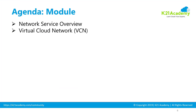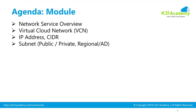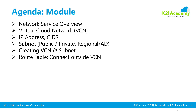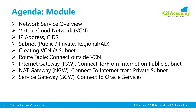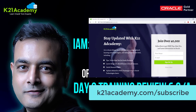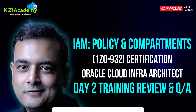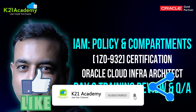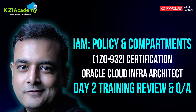Next week I'm going to talk about networking — things like virtual cloud network, CIDR, subnet, routing tables, and different types of gateways you should know, such as internet gateway, NAT gateway, service gateway, and dynamic routing gateway. Don't forget to subscribe at k2nacademy.com/subscribe or on our YouTube channel so you don't miss any new content related to Oracle Cloud. That's it for today from Atul Kumar at Team K2N Academy — I'll see you next Tuesday where we talk about networking in OCI.